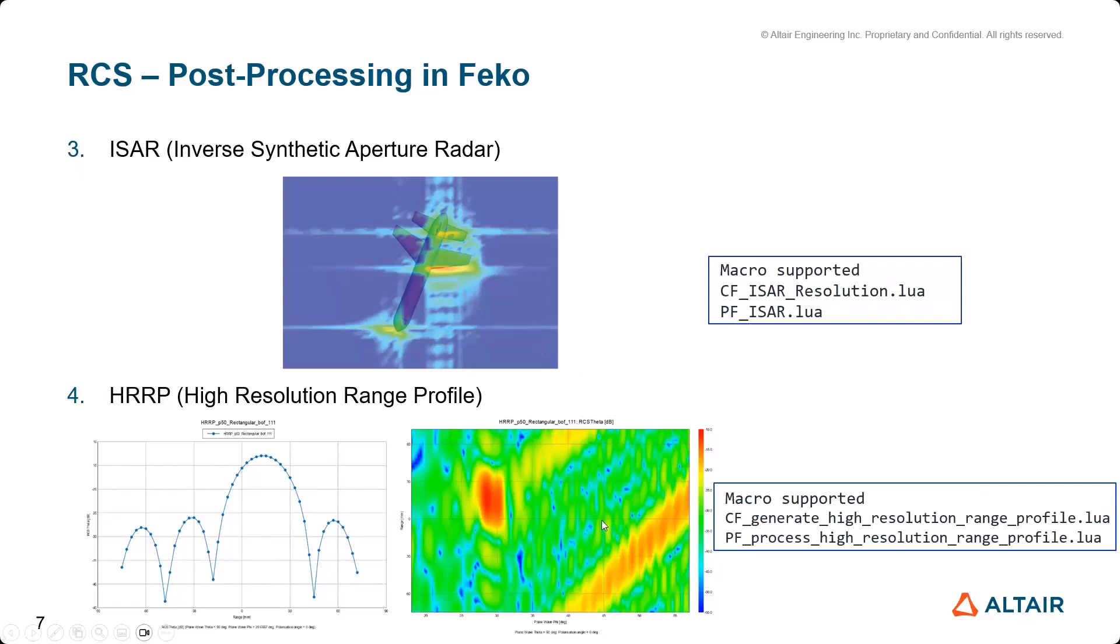The fourth is HRRP (High Resolution Range Profile). This plot is also supported by pre-built macros. HRRP is required for automatic target recognition. These macros help you convert the frequency range, which is RCS simulation in FEKO, to the range domain as you can see here.